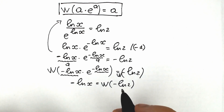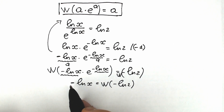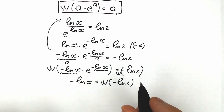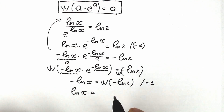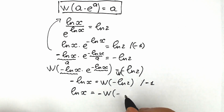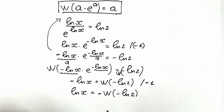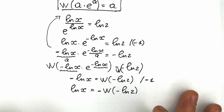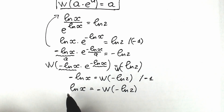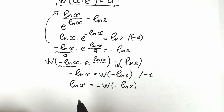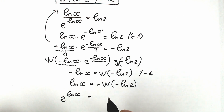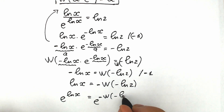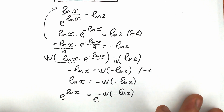Right now let's multiply both sides by minus one to remove the minus sign. As a result we have natural log x equal to minus Lambert W of minus natural log 2. Now let's find our x by writing base e on both sides. So e to the power natural log x on the left, equal to e to the power of minus Lambert W of minus natural log 2 on the right. And e to the power natural log x equals only x.